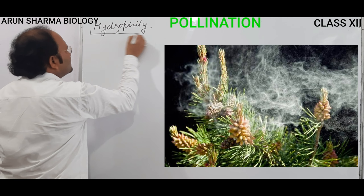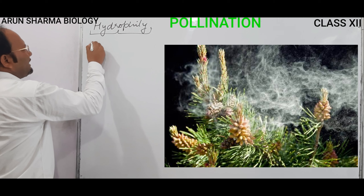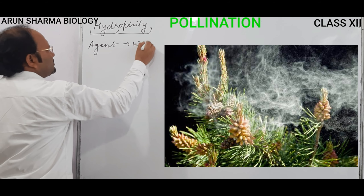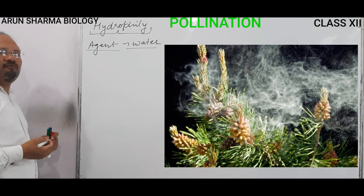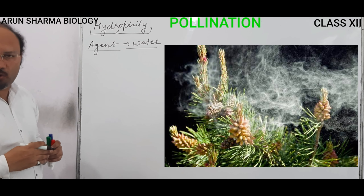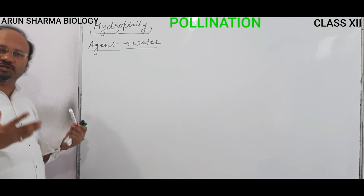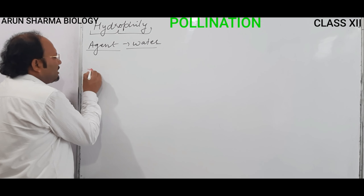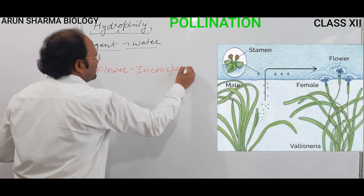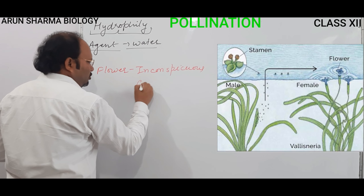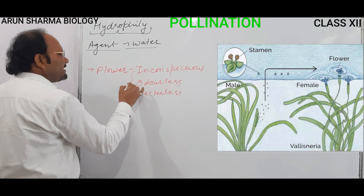Now we talk about hydrophily. 'Hydro' means water, and 'philean' means to love, to attract. So in hydrophily, the agent is water — the pollination takes place with the help of water. If the plant is being pollinated by water, it may be living inside water. The flowers are inconspicuous and odorless.